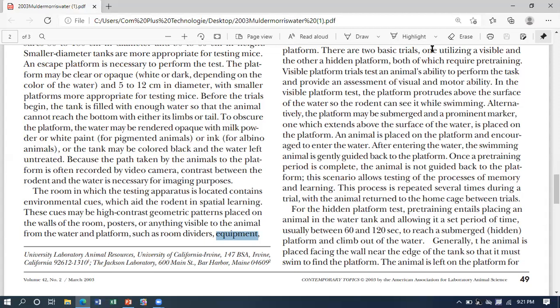For the visible platform trial, we assess the motor or visual ability to reach the visible platform. The platform is above the surface of water so it can be visualized. We guide the animal to the platform during the first training session. After that, we will not guide and then we will test its memory and learning - how much it has learned.